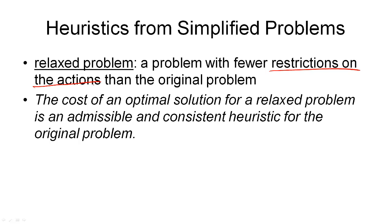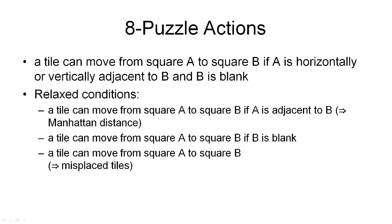An optimal solution for the relaxed problem can have, at most, as many steps as the optimal solution for our original problem, because that is a solution for the relaxed problem. In general, what we have is that in our relaxed problem, we allow shortcuts to be taken with these relaxed actions that are not possible in our original problem. If we take out these shortcuts, we end up with longer solutions.